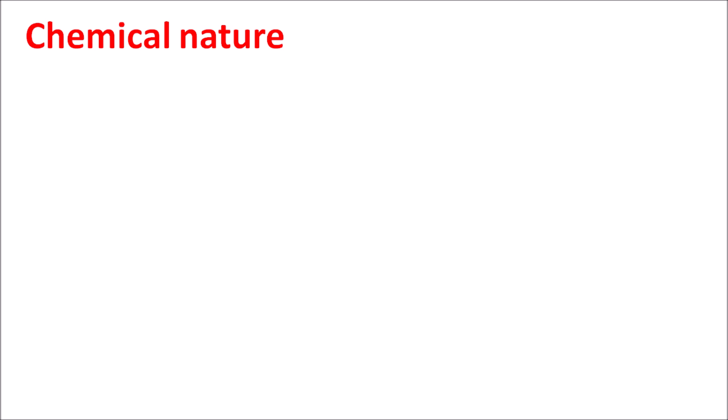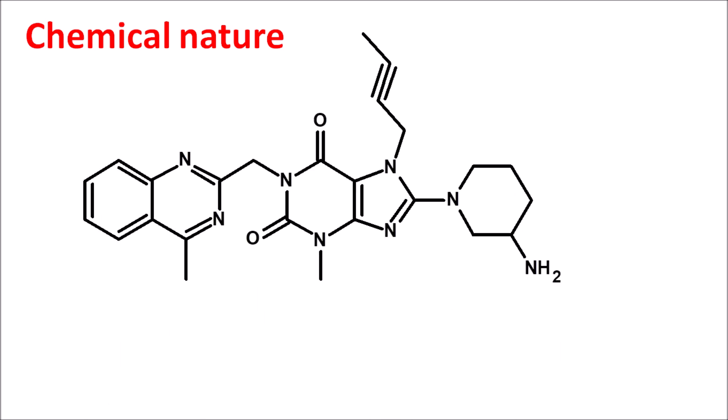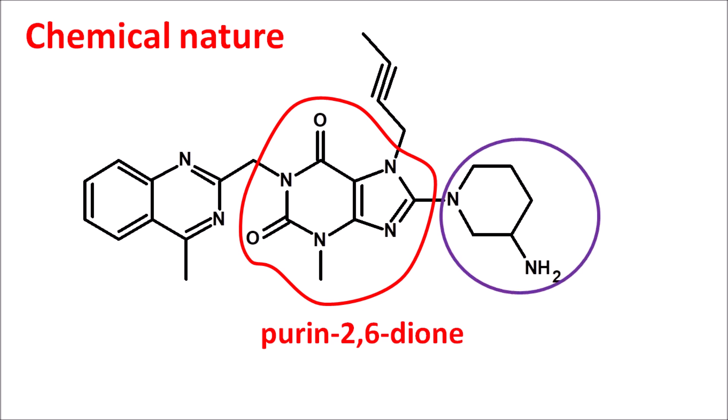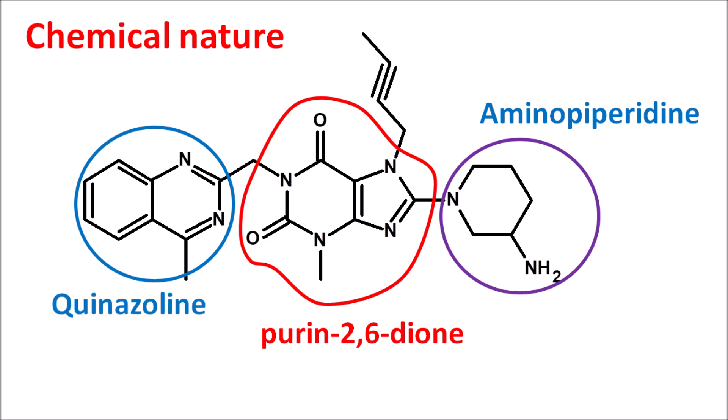Now, what is the chemical nature of this drug? This is the structure of linagliptin. We can see different rings are present in this structure. The central ring is the purine, which has ketone groups at the second and sixth position — so this is purine-2,6-dione. This ring is attached to a heterocyclic ring system — a pyrimidine — and also to a piperidine ring with an amino group. On the other side, it is attached with a quinazoline ring. So linagliptin is a combination of these three ring systems.